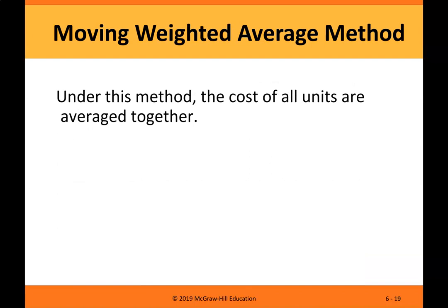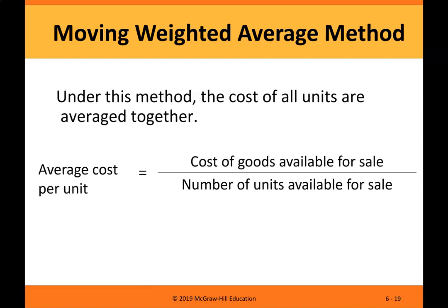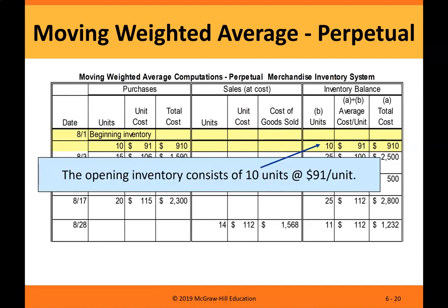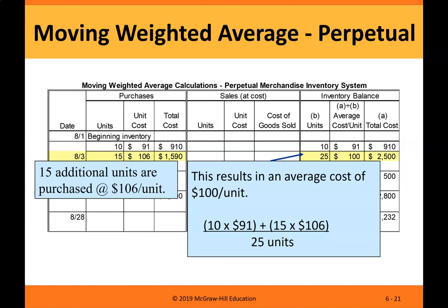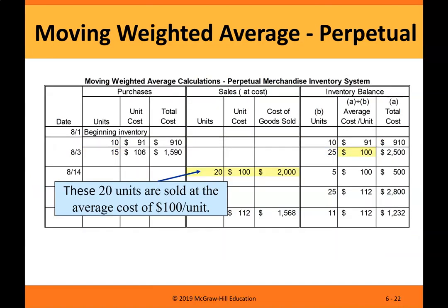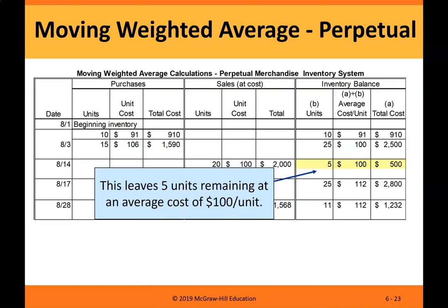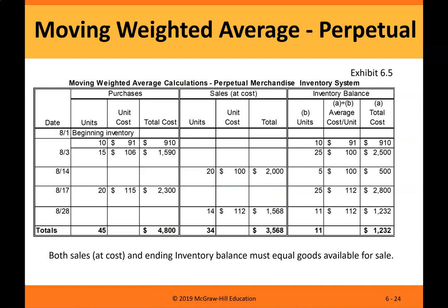Moving weighted average method. Under this method, the cost of all units are averaged together. Average cost per unit equals cost of goods available for sale divided by number of units available for sale. The opening inventory consists of 10 units at $91 per unit, and 15 additional units are purchased at $106 per unit, resulting in an average cost of $100 per unit. These 20 units are sold at the average cost of $100 per unit, leaving 5 units remaining at an average cost of $100 per unit. Both sales at cost and ending inventory balances must equal goods available for sale.